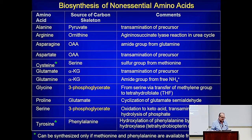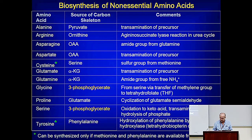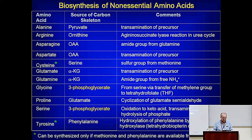Non-essential amino acids are the ones that we can synthesize, and there are essentially about ten of them. In many cases, their synthesis is the reverse of degradation. For example, you make alanine through transamination of pyruvate.